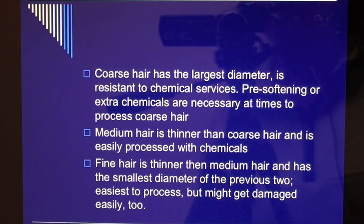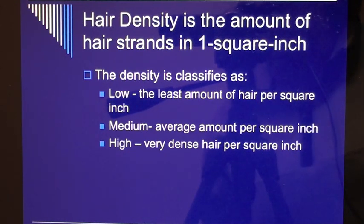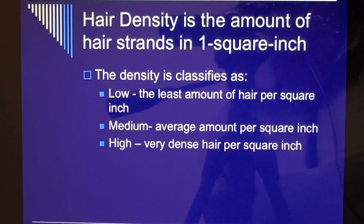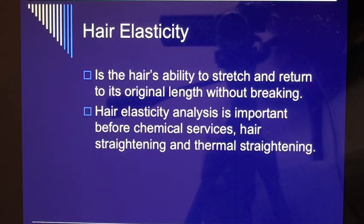Fine hair is the easiest to process but might get damaged easily. Hair density is the amount of hair strands per one square inch, classified as low (least amount per square inch), medium (average amount per square inch), and high (very dense hair per square inch).